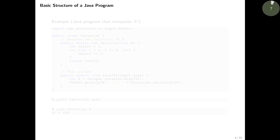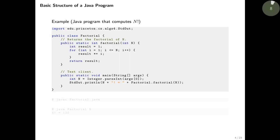Let's start by looking at an example of a Java program. The program computes the factorial of a given number — it's called factorial, takes an input number n, and computes n factorial. Recall that factorial of n is 1 times 2 times 3 all the way up to n. For example, if n is 5, 5 factorial is 1 × 2 × 3 × 4 × 5, which is 120. And 0 factorial by definition is 1.